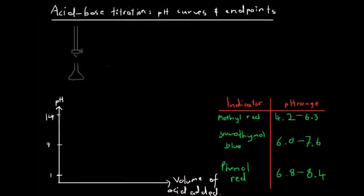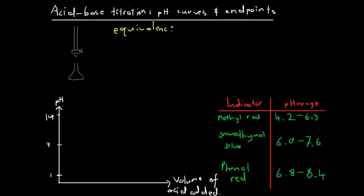We're going to look at a specific type of titration: an acid-base titration. We spoke in the introductory titration video about the idea of an equivalence point. The equivalence point is when neither reactant is in excess — that is to say that the reactant in the burette and the reactant in the conical flask are present in the ratio given by the chemical equation.